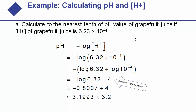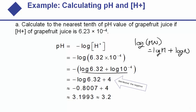Remember the rule of logarithms: log(m × n) = log m + log n. So log of 6.32 times 10 to the negative 4 becomes log of 6.32 plus log of 10 to the negative 4, and both still carry the negative sign out front. Now, log base 10 of 10 to the negative 4 simply equals negative 4. The negative distributes with that, which is why we get plus 4 at the end.